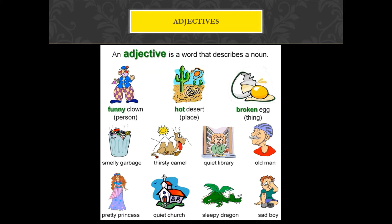More examples of adjectives describing nouns: smelly garbage, thirsty camel, quiet library, old man, pretty princess, sleepy dragon, sad boy.